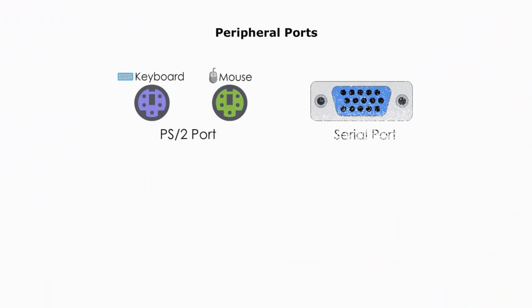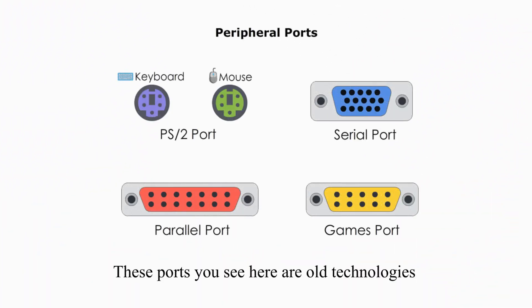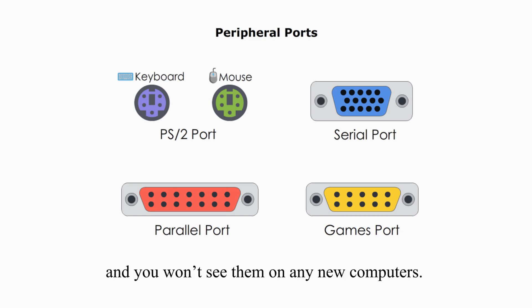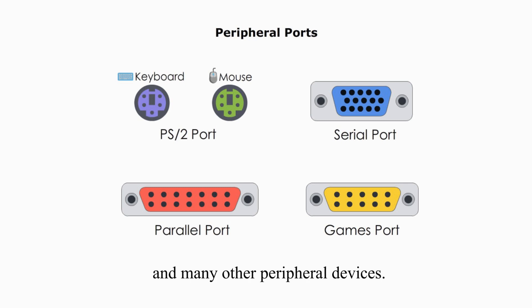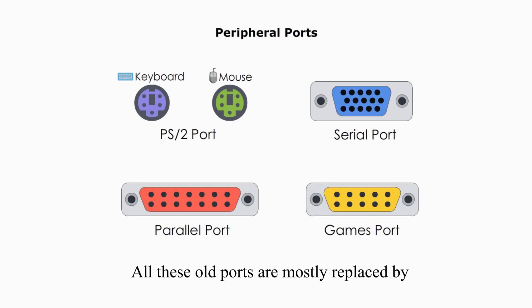Peripheral ports. These ports you see here are old technologies and you won't see them on any new computers. PS2 ports are used for the mouse and keyboard. Serial ports and parallel ports are used for connecting cameras, printers, scanners and many other peripheral devices. Game port is for joystick input. All these old ports are mostly replaced by USB ports nowadays.